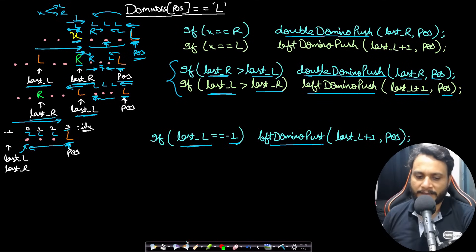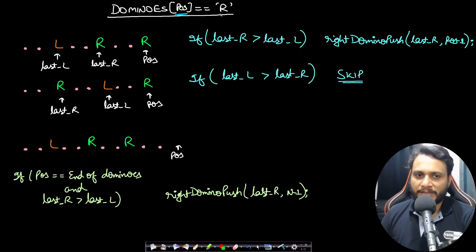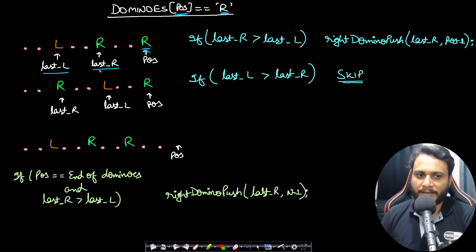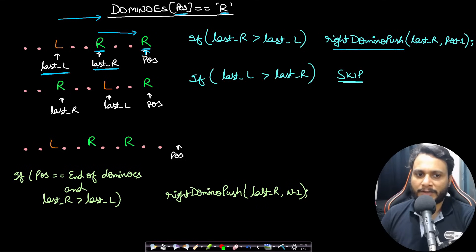Similarly, when looking at a domino pushed to the right, check the nearest previously-seen forced domino by comparing last_R and last_L indices. If last_R is greater than last_L while moving left to right, apply right_domino_push from last_R to position minus one — iterating and putting R values across that range.